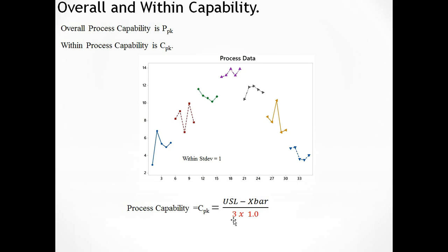Now if I calculate my process capability, this time CPK, the denominator for the process capability becomes 3 times 1, because I'm using now the within standard deviation. So you can see for the same data, the overall capability, in the previous case the denominator was 10, but now it becomes 3. So over a factor of 3 difference. So the CPK would be over 3 times higher than the PPK using the same data.